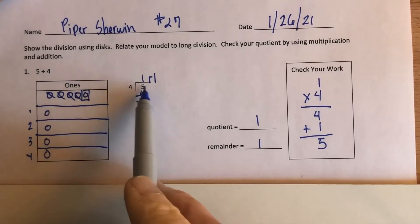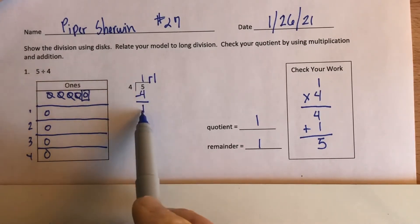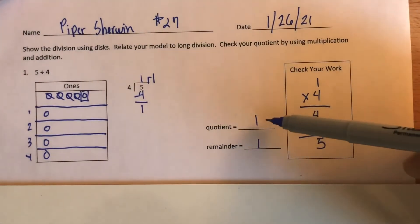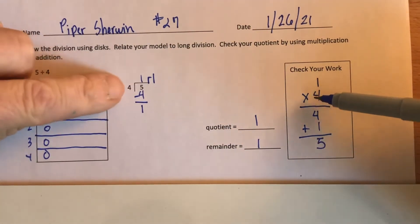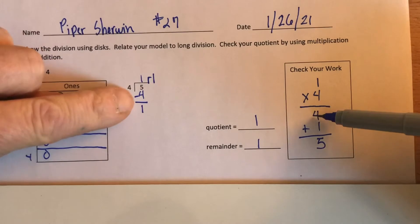And that's what we showed here. Four fits into five one time, one times four is four, subtract you get one remainder one. So quotient is one, remainder is one. So one times four equals four, add the one and you get five.